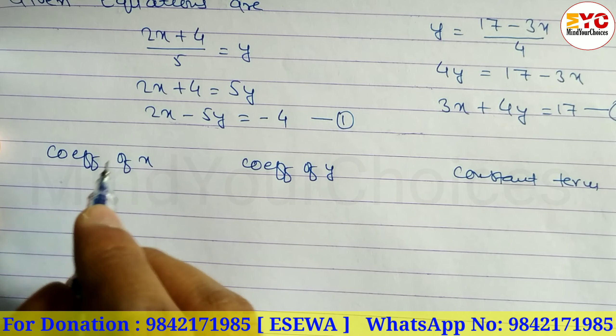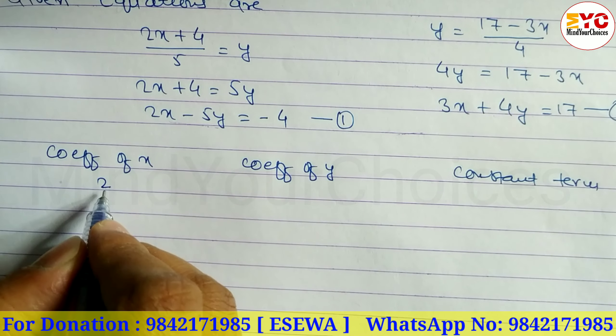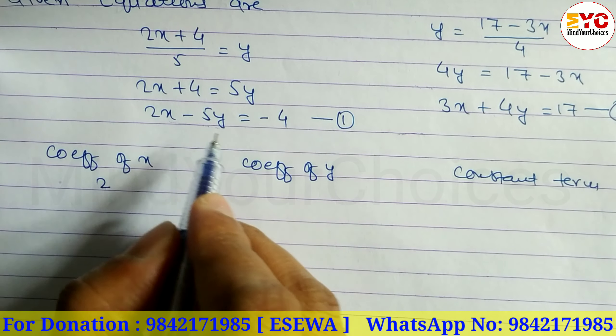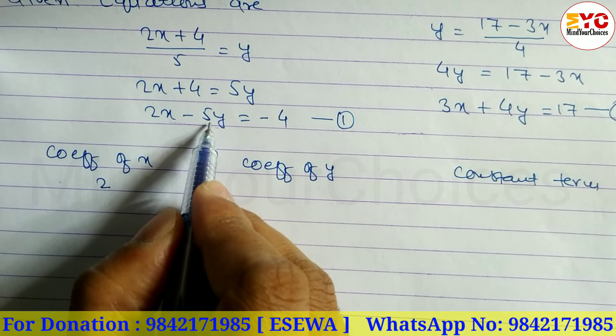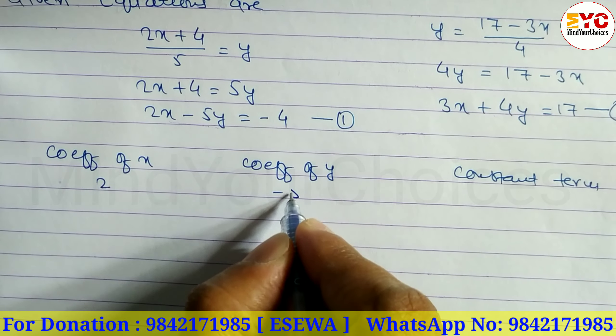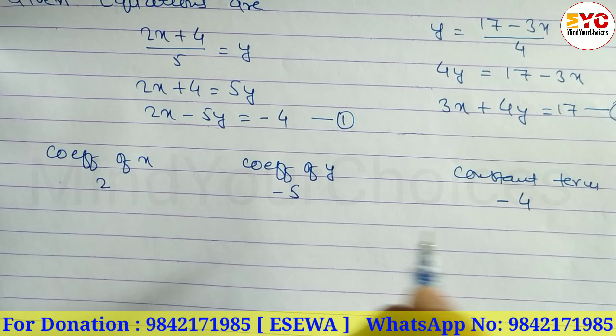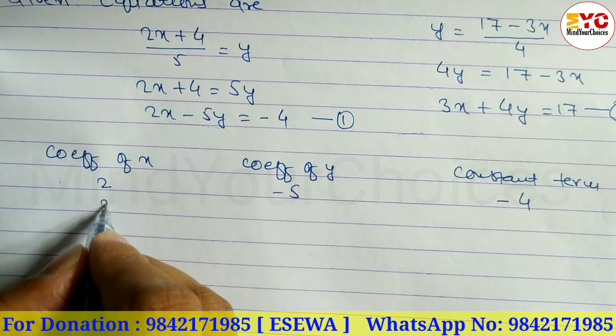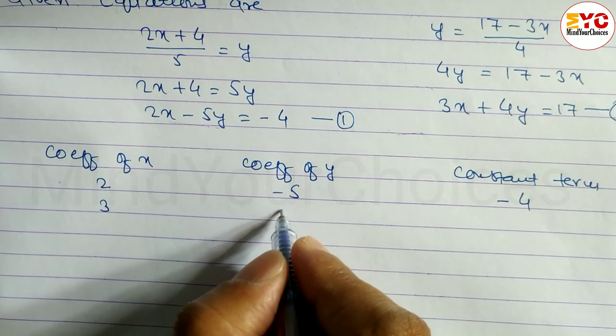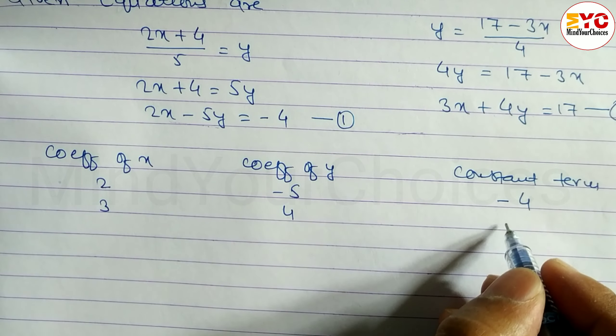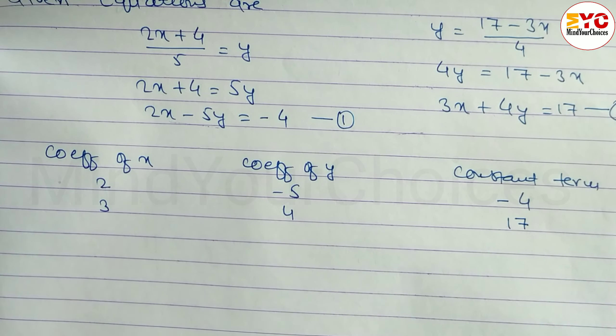Coefficient of x is 2, so write here 2. Coefficient of y is minus 5, so we have to take here minus 5 with the sign. Constant number is minus 4, so write minus 4. Similarly, in the second equation, coefficient of x is 3, coefficient of y is 4, and constant number is 17.